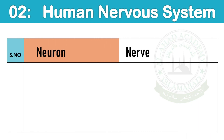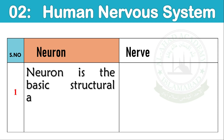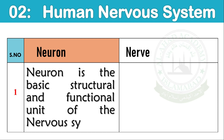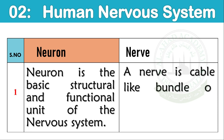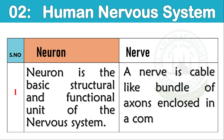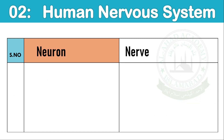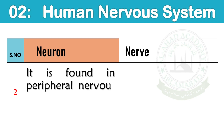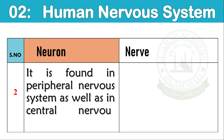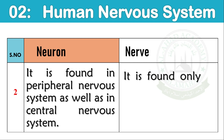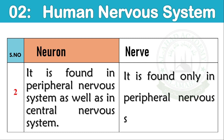Neuron and Nerve: A neuron is a basic structural and functional unit of the nervous system. It is found in the peripheral nervous system as well as in the central nervous system. A nerve is a cable-like bundle of axons enclosed in a common sheath. It is found only in the peripheral nervous system.